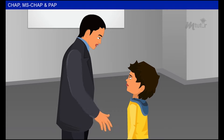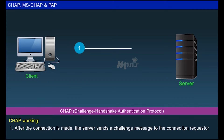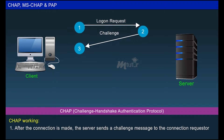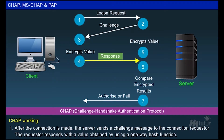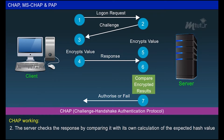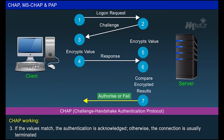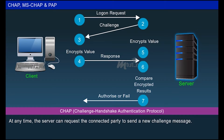Sendal elaborated on the working of CHAP. After the connection is made, the server sends a challenge message to the connection requester. The requester responds with a value obtained by using a one-way hash function. The server checks the response by comparing it with its own calculation of the expected hash value. If the values match, the authentication is acknowledged; otherwise, the connection is terminated. At any time, the server can request the connected party to send a new challenge message.